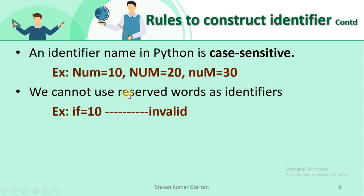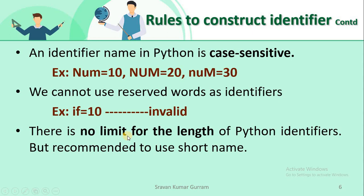The next rule: we cannot use reserved words or keywords as identifiers. For example, 'if' is a keyword in Python — if you try to use 'if' as a variable name, that is invalid. Also, there is no limit on the length of Python identifiers. You can use any length, but it is advisable to use short, meaningful names.